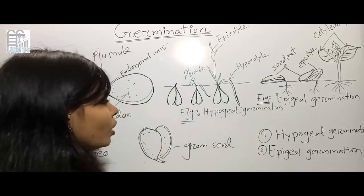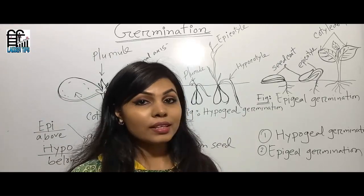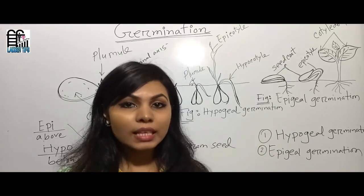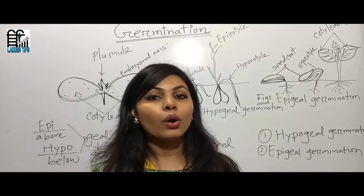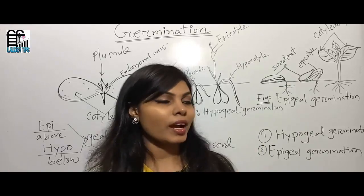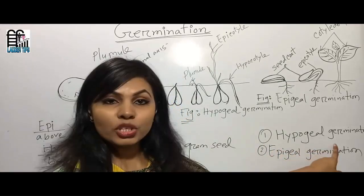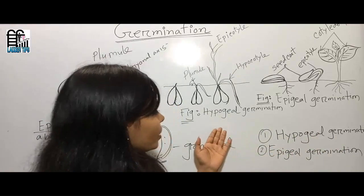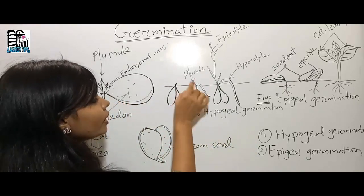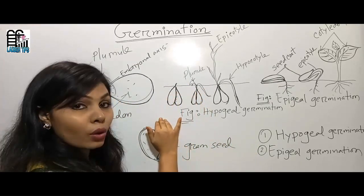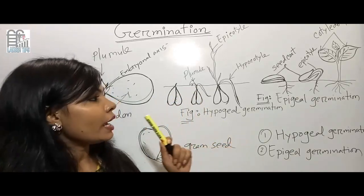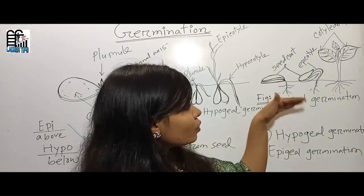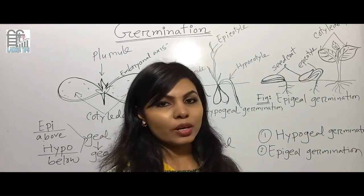In summary: the development of a seedling from a seed is called germination, and it is of two types. In hypogeal germination, the plumule comes out of the soil leaving the cotyledons below the soil. In epigeal germination, both the plumule and cotyledons come out of the soil.